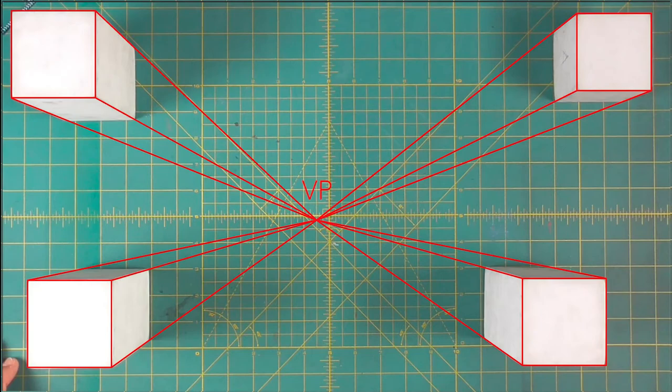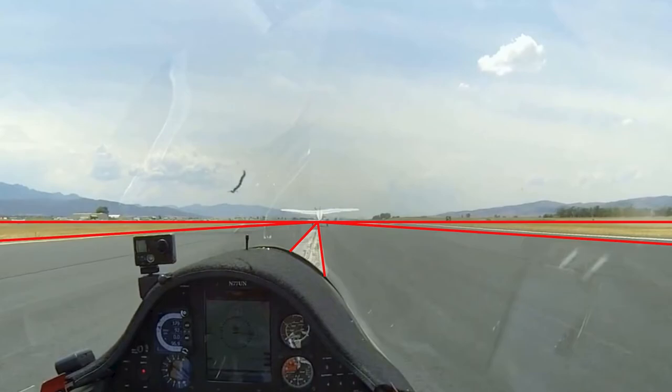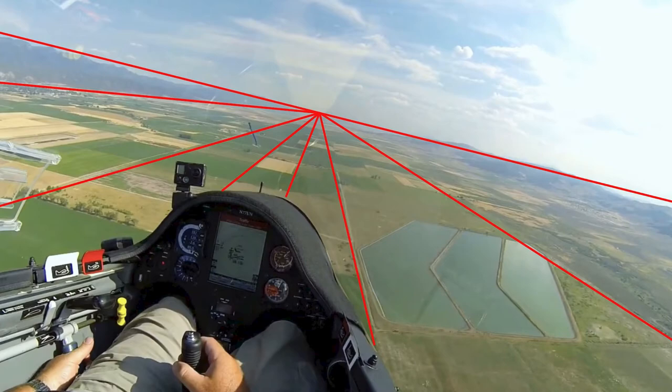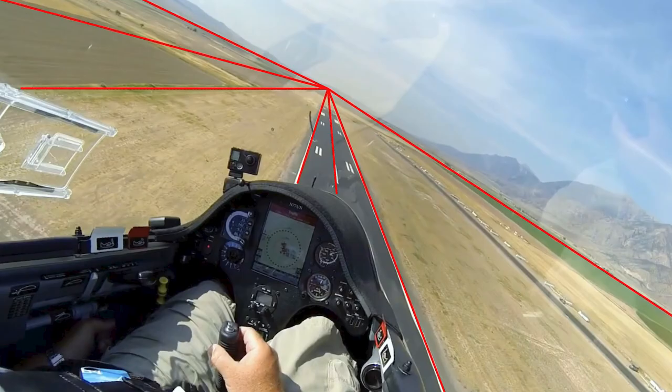The vanishing point will always occur on the horizon line. We always see the horizon line at our eye level. The vanishing point and the horizon line are dictated by the position of your eyes in space.